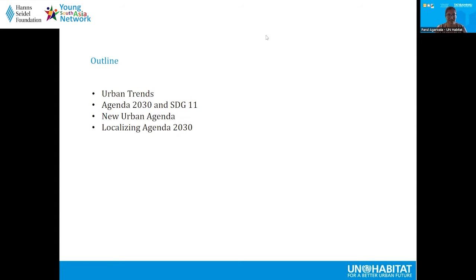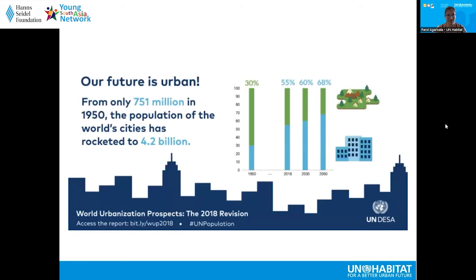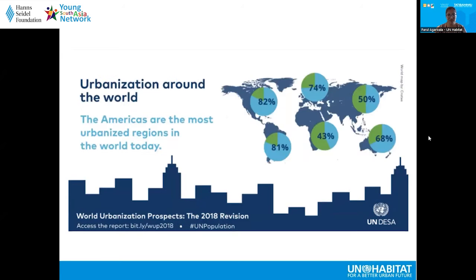What I would like to cover today are some broad urban trends and why urbanization will continue to be central over the next few decades, what Agenda 2030 and SDG 11 are, and how they align with other SDGs. Urbanization is a strong force that has emerged over the last three to four decades. While the urban population in the 1950s was only 751 million, we now have 4.2 billion persons living in cities globally, and it's going to continue to grow. We are currently 55% urban and moving towards 70–80% or more.